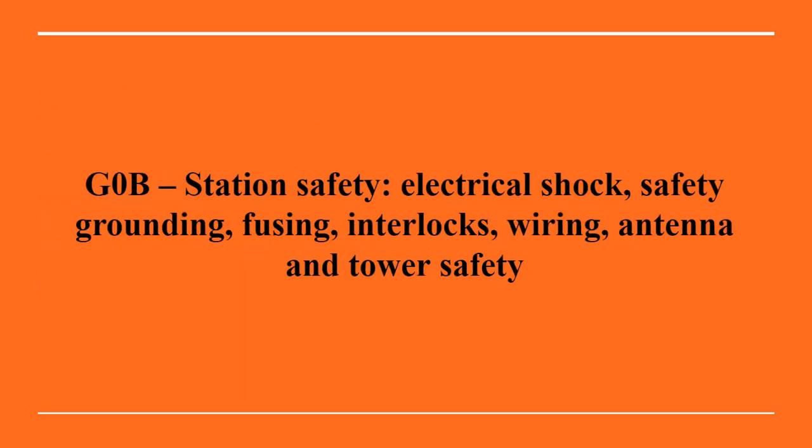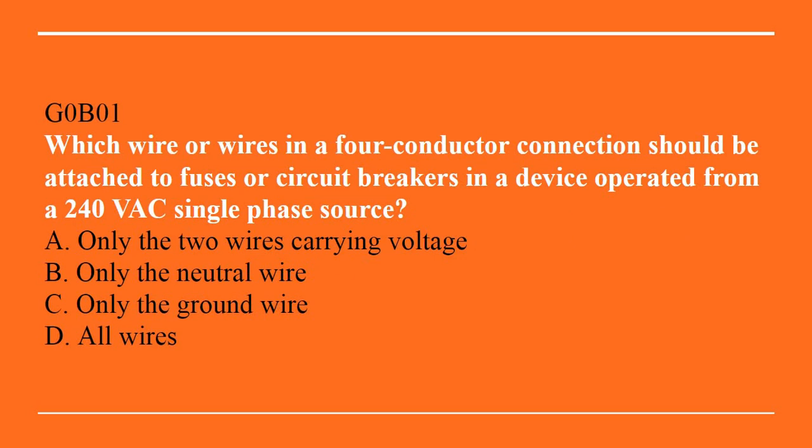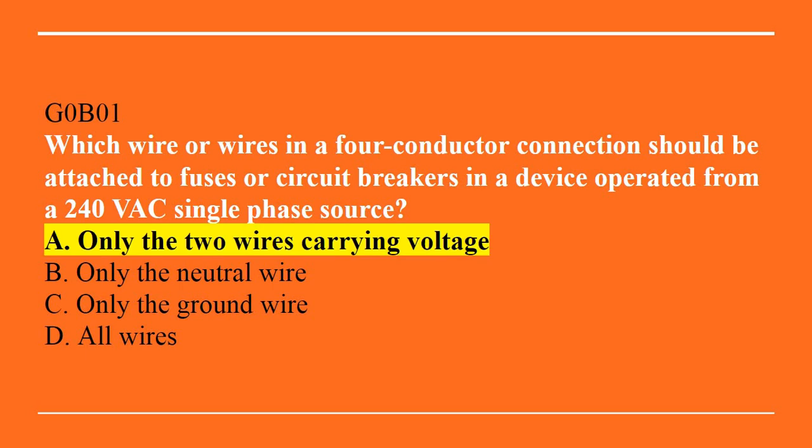G0B covers station safety, electrical shock, safety grounding, fusing, interlocks, wiring, antenna, and tower safety. G0B01: Which wire or wires in a four-conductor connection should be attached to fuses or circuit breakers in a device operated from a 240-volt AC single-phase source? A, only the two wires carrying voltage. B, only the neutral wire. C, only the ground wire. Or D, all of the wires. Correct answer is A — only the two wires carrying voltage.